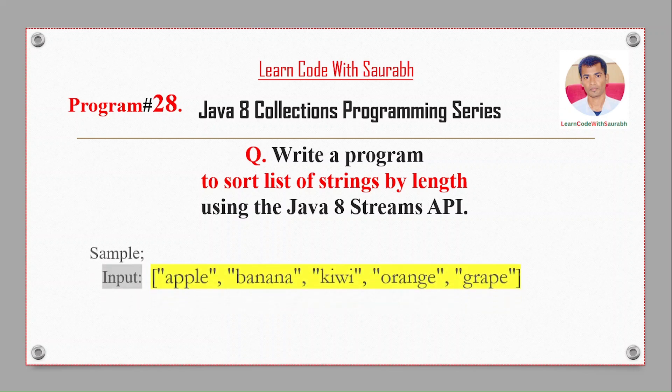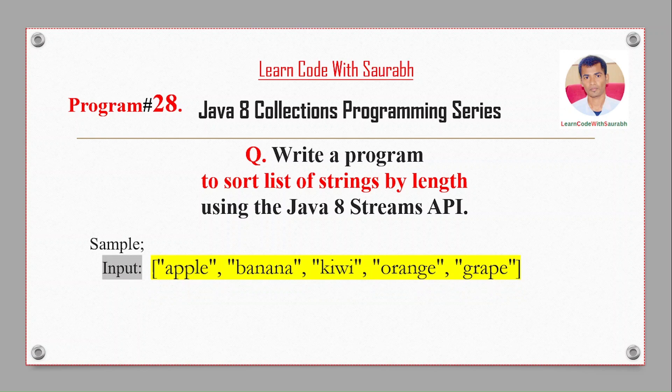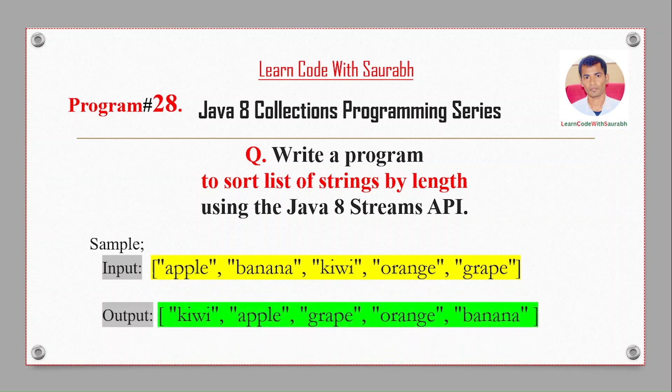For example, if we have some sample input like apple, banana, kiwi, orange, grape, we will get the sorted order by their length like kiwi, apple, grape, orange, banana. If you see here, apple and grape both have the same character length.